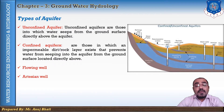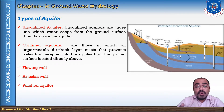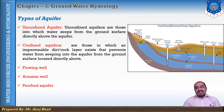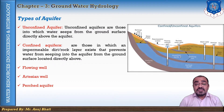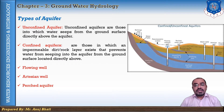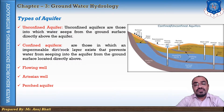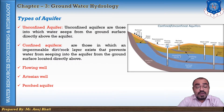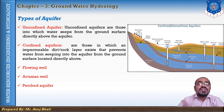The last type is the perched aquifer. When an impermeable saucer-shaped stratum of small areal extent occurring in the zone of aeration retains and holds some amount of water, that is known as a perched aquifer. It yields a limited quantity of water because usually such aquifers are not recharged.